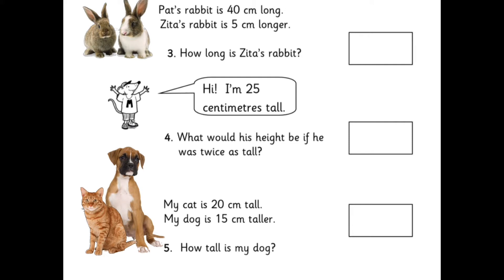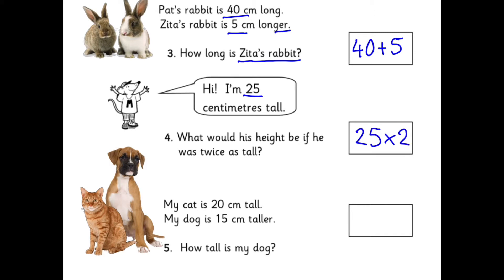Pat's rabbit is 40 centimetres long. Zeta's rabbit is 5 centimetres longer. How long is Zeta's rabbit? That one is adding again because it's 'longer', so it's 40 and 5. Make sure you write down the number sentence as well as the answer. This character is 25 centimetres tall — what would his height be if he was twice as tall? So that's a times: 25 times 2. But remember there's another way of doing that — you could do 25 and 25.